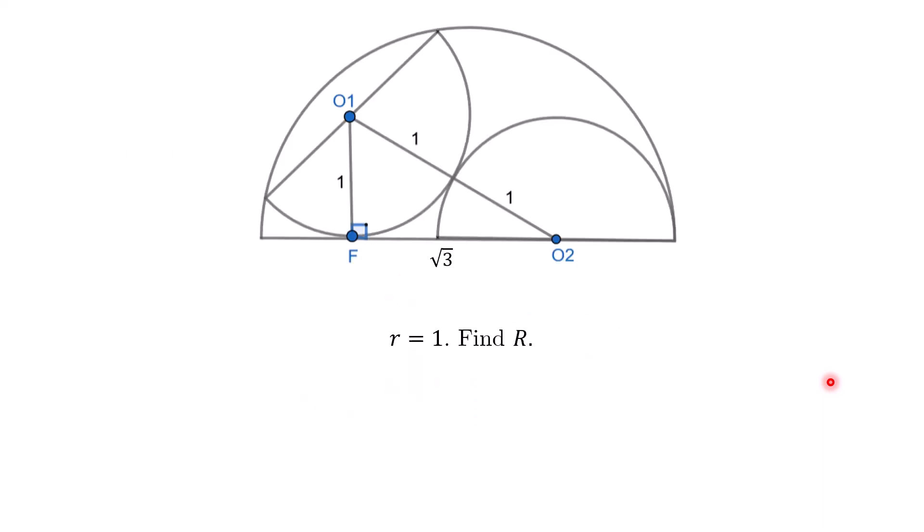Okay, so for the solution, what we'll do is, without loss of generality, we'll let the smaller semicircle radius be 1. And then we'll let capital R denote the larger semicircle radius. So once we find capital R, we'll be almost done with the problem.